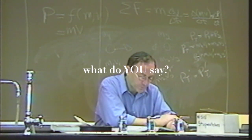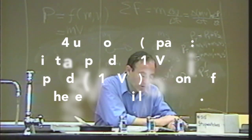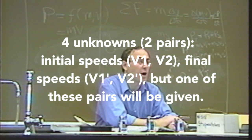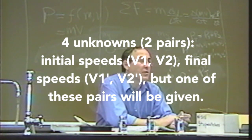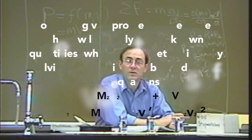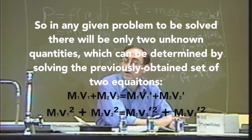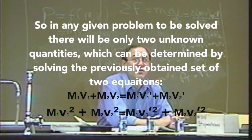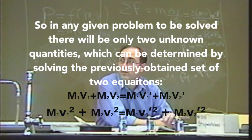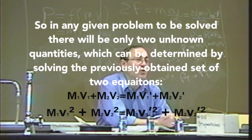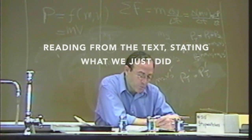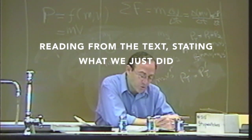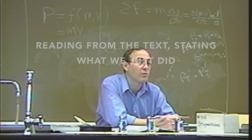There are two unknowns. v1 prime and v2 prime are both unknown. Usually one of the initial or final speeds will be given, so there'll always be two unknowns - and we have two equations. So we can solve for two unknowns. If we know the masses and initial velocities, we can solve these two equations for the velocities after the collision to find v1 prime and v2 prime.